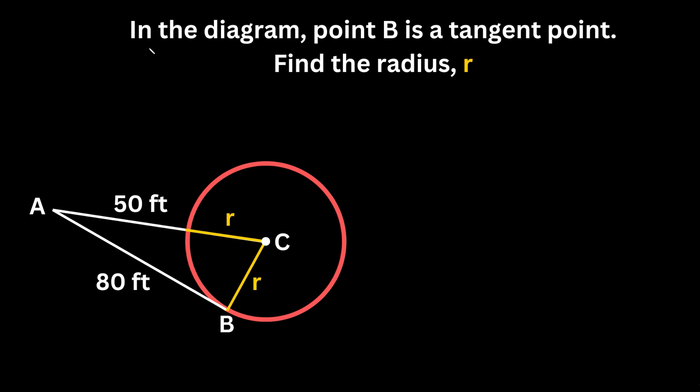The instructions say: in the diagram, point B is a tangent point. Find the radius R. As you can see, we have this triangle ABC and it's telling us that point B is a tangent point.